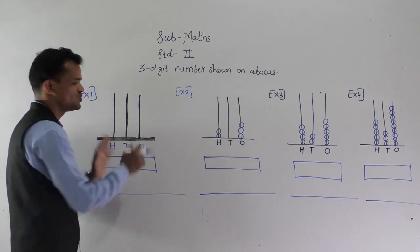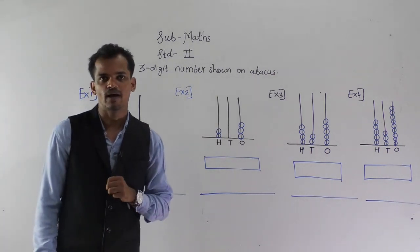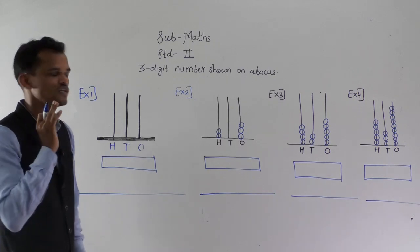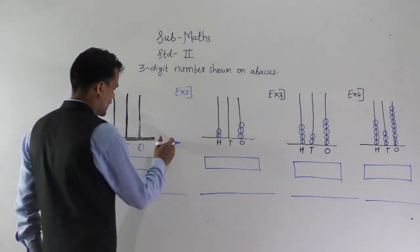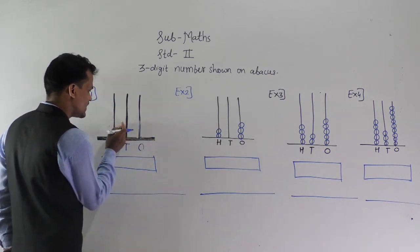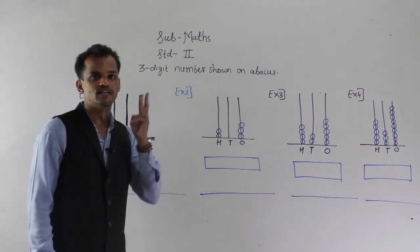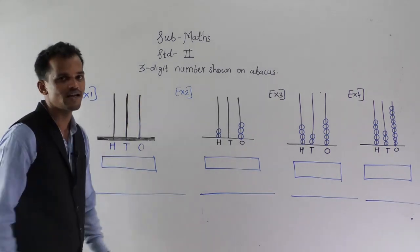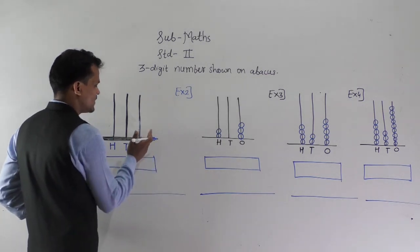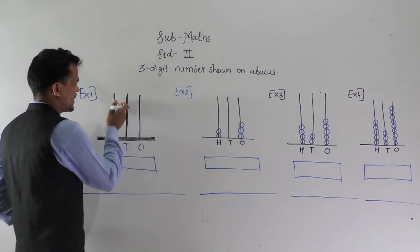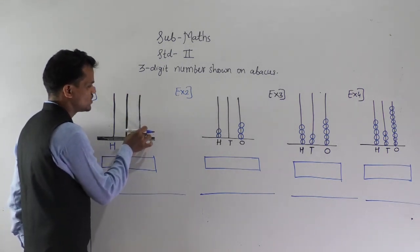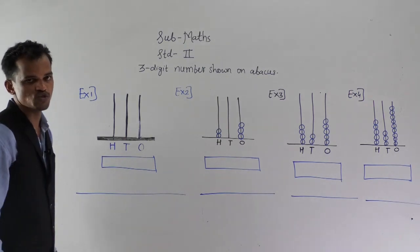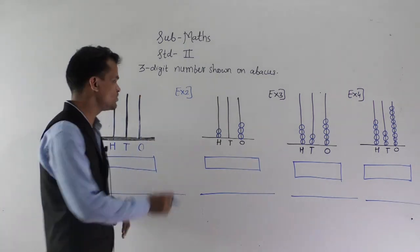This is the picture of an abacus. To show a three digit number, the abacus should have three spikes. From the extreme right side, it starts from the ones place, then tens place, and then hundreds place. This spike shows the ones place, this spike shows the tens place, and this spike shows the hundreds place.